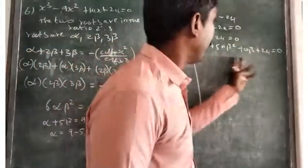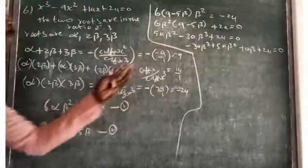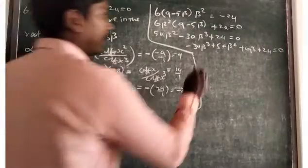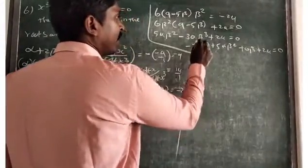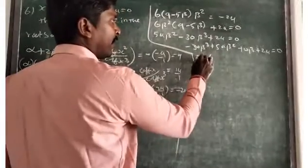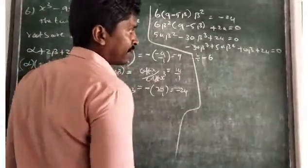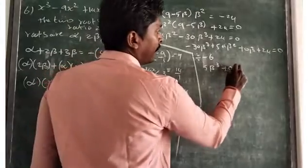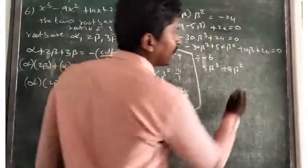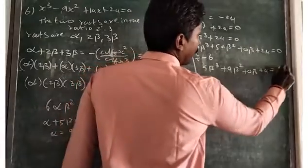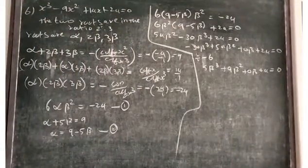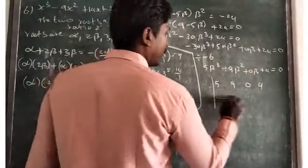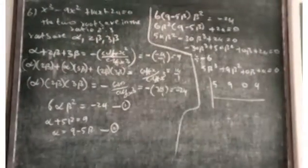We can divide the entire equation by minus 6 to simplify. Dividing minus 30 beta cubed plus 54 beta squared plus 24 equals 0 by minus 6 gives 5 beta cubed minus 9 beta squared plus 0 beta minus 4 equals 0. Now use the synthetic division method. The coefficients are 5, minus 9, 0, minus 4. Start with 2 to get zero in the last term.